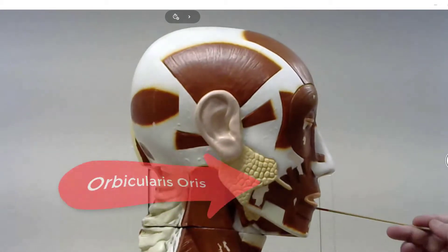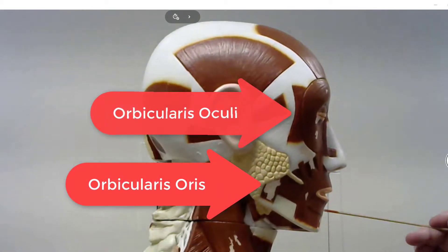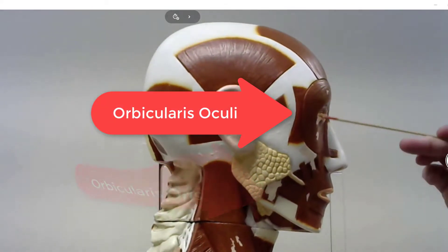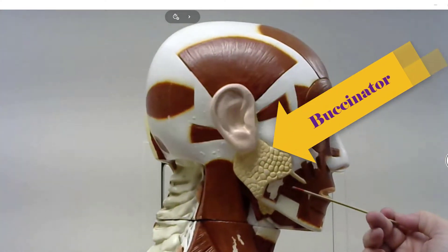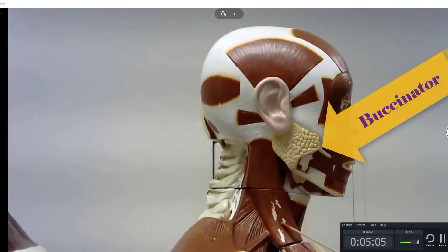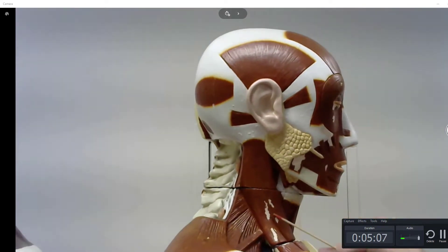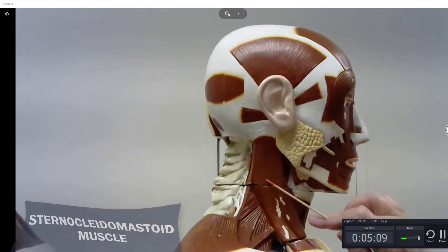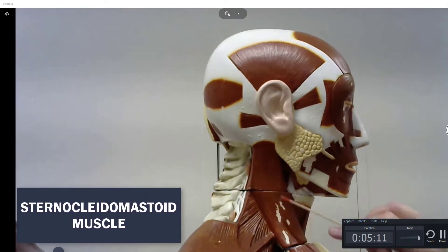You've got the orbicularis oris and the orbicularis oculi, and then the buccinators. Here you can see very clearly this is the SCM muscle, or the sternocleidomastoid muscle.